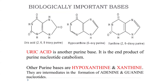Biologically important bases include uric acid, hypoxanthine, and xanthine. Uric acid is a purine base and the end product of purine nucleotide catabolism — it is a waste product the body must eliminate. If uric acid accumulates and cannot be excreted, it leads to gout disease, which is associated with inflammation of the joints.